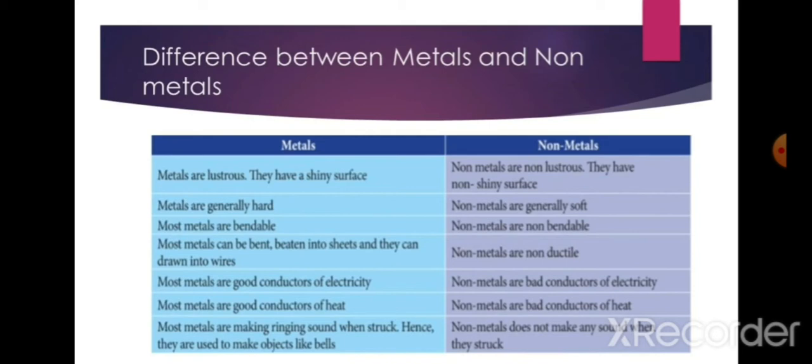Because metals make a ringing sound when struck, they are used to make objects like bells. Non-metals do not make any sound when struck.